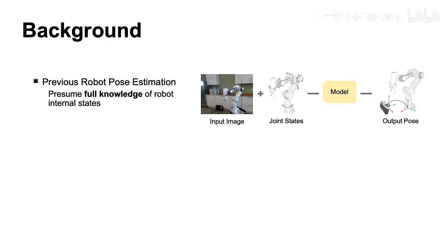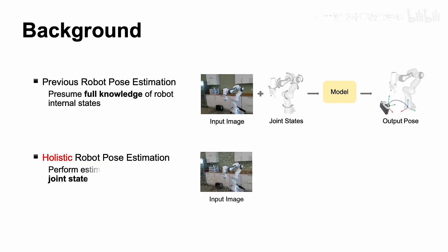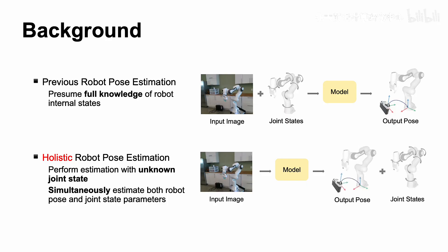Therefore, in this work, we address the challenge of holistic robot pose estimation, as we perform estimation with unknown joint state, and aim to simultaneously estimate both the robot pose and joint state parameters.